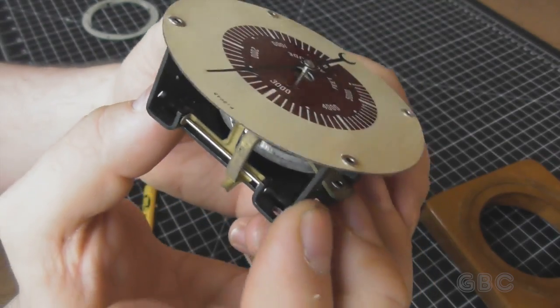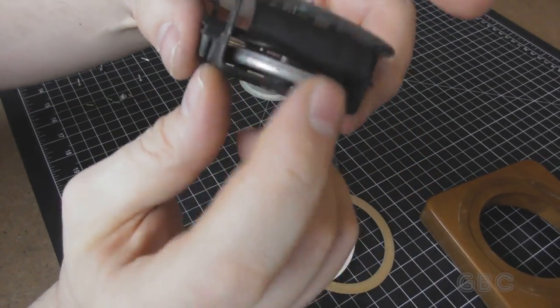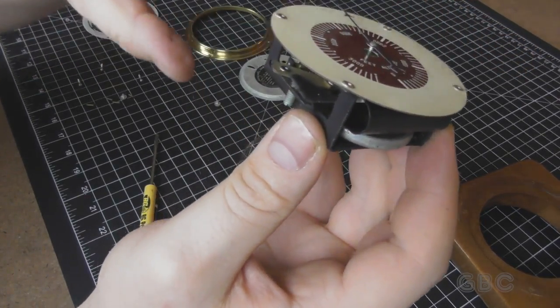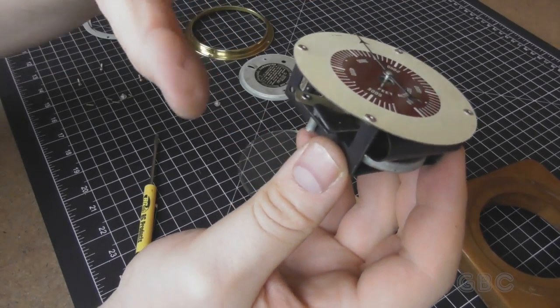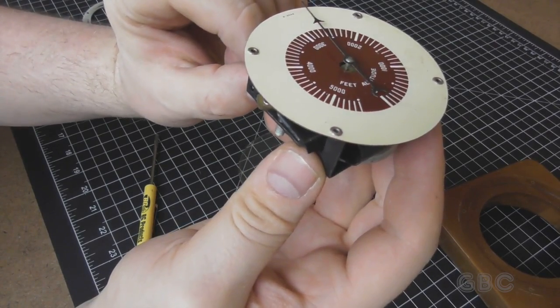Kind of hard to see in here. Here, you can see the edge of the capsule. And that is sealed. And as the atmospheric pressure changes, that will move the needle up or down.